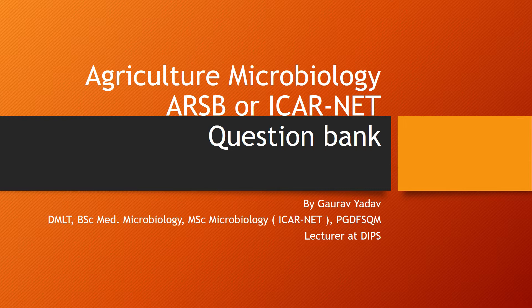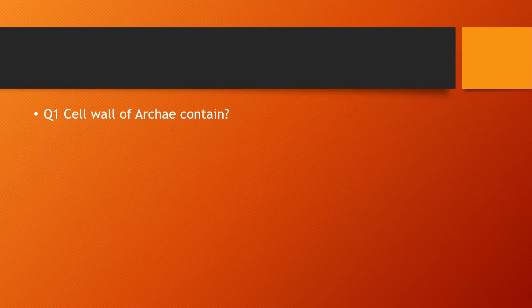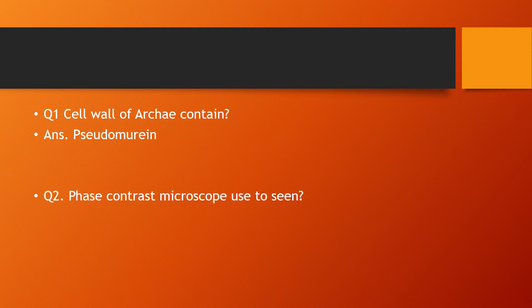First question: cell wall of Archaea contains — the answer is pseudomurein. Second question: phase contrast microscope is used to see — the answer is living unstained structures.